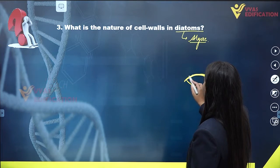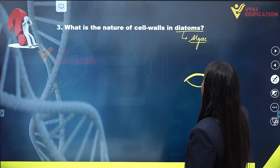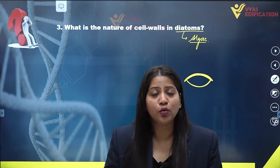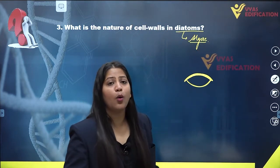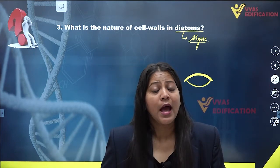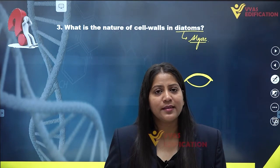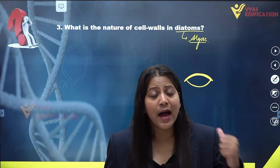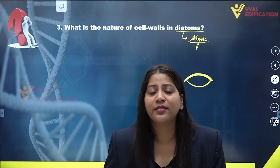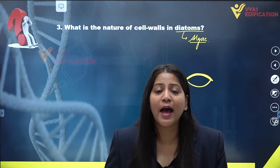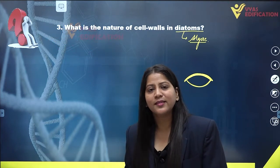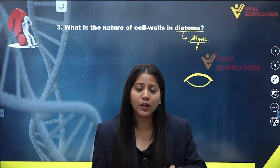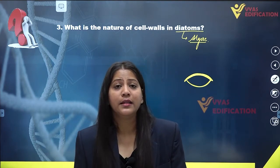The cell walls of diatoms are actually overlapping on each other, forming two thin overlapping cell walls. This cell wall is made up of silica. Diatoms are the only organisms which have cell walls made up of transparent and opaline silica. Thus they form two overlapping cells.